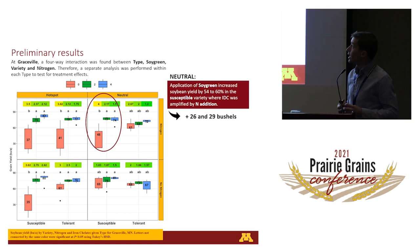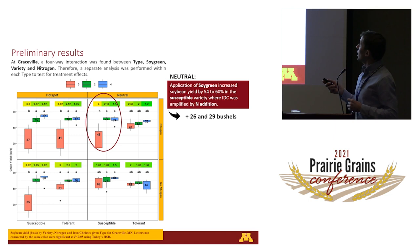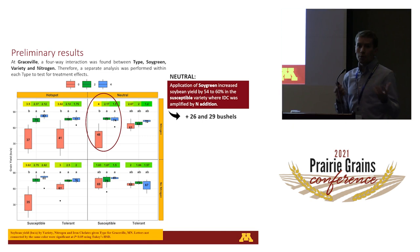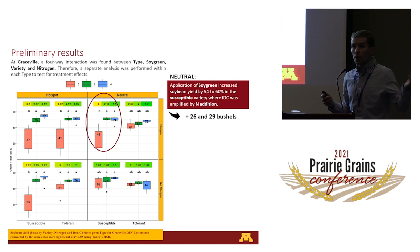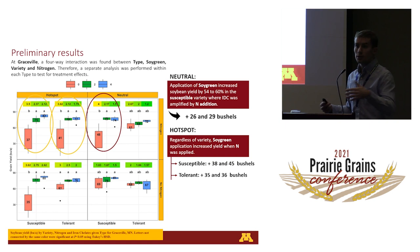At Graceville, we found another four-way interaction — this time between type, soy green, variety, and nitrogen. At our neutral spot, we found that application of soy green increased soybean yield by 54 to 60 percent in the susceptible variety where IDC was amplified by nitrogen. The farmer wouldn't normally apply nitrogen in the field, but we applied it considering there could be nitrogen carryover from a previous corn crop, especially in a dry year when urea may carry over into the next soybean season.